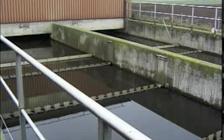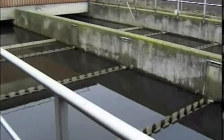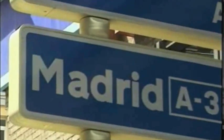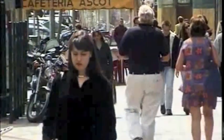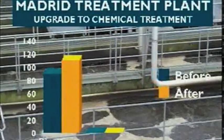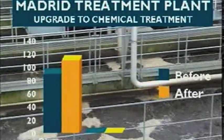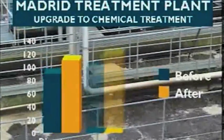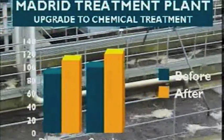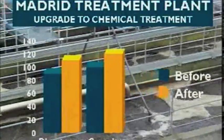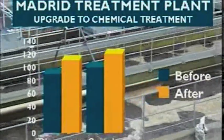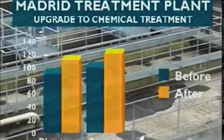In most circumstances, it is far more cost-effective to construct and run a chemical process than a biological plant. In Madrid, Spain, chemical purification has complemented the existing biological process. This has resulted in an improvement of the existing purification performance, giving energy savings and increased capacity of the plant.